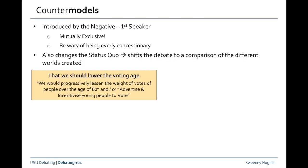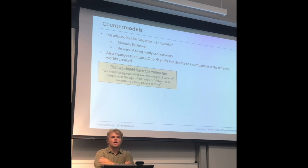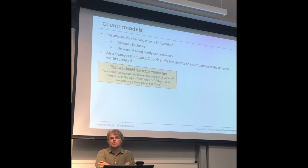A few counter model examples. If you get a topic of 'we should lower the voting age,' one thing you might say is we progressively lessen the weight of votes of people over the age of 60. You might want to do that because the debate is centred around young people not getting enough of a voice in elections. Or you could say we'll advertise and give mechanisms to incentivise young people to vote. Do you reckon that's a good counter model?